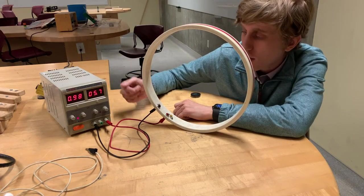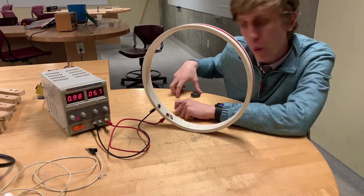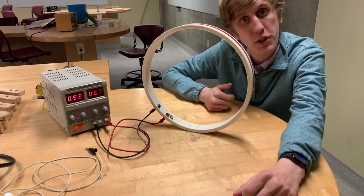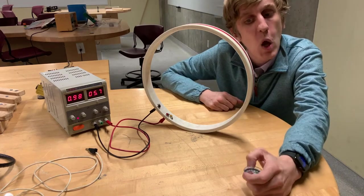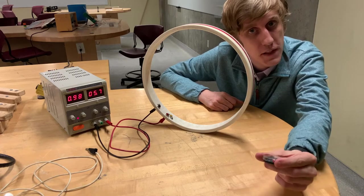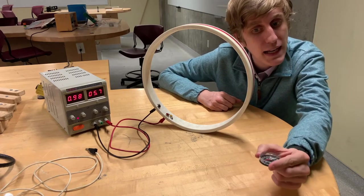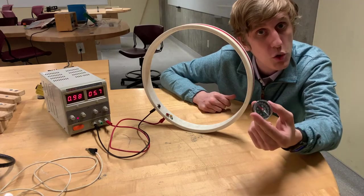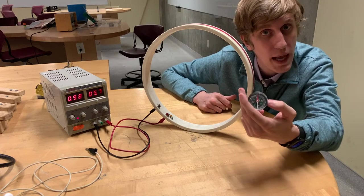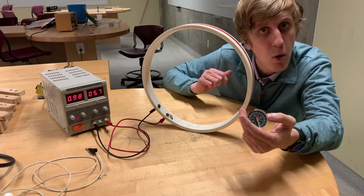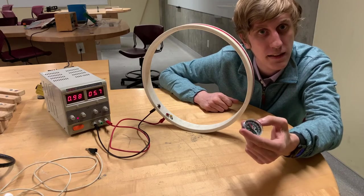We have a current flowing through this loop of wire. This current will produce a magnetic field. We can detect the direction of this magnetic field by bringing this compass close by. The north of the compass, which is red on this compass, will point in the direction of the magnetic field.